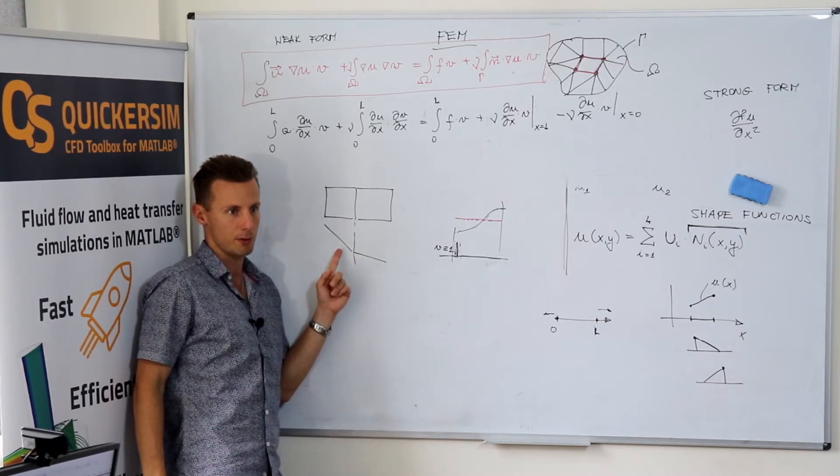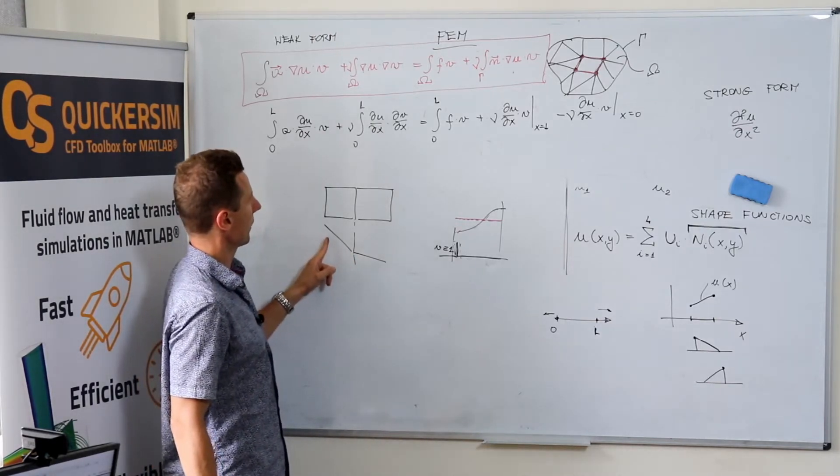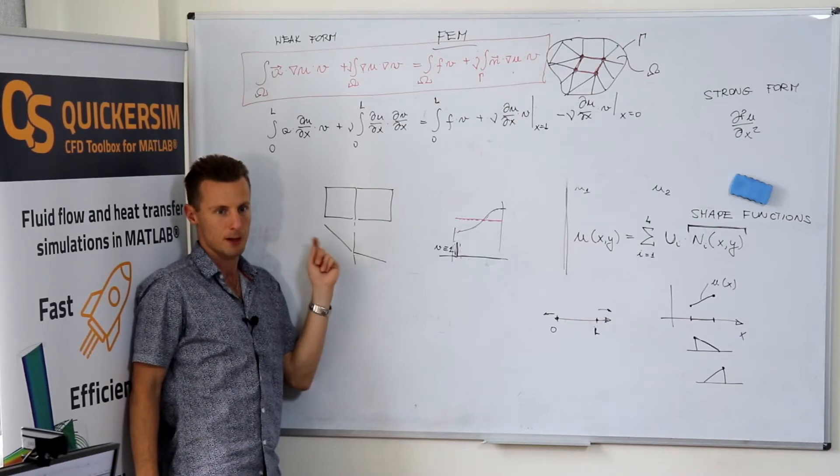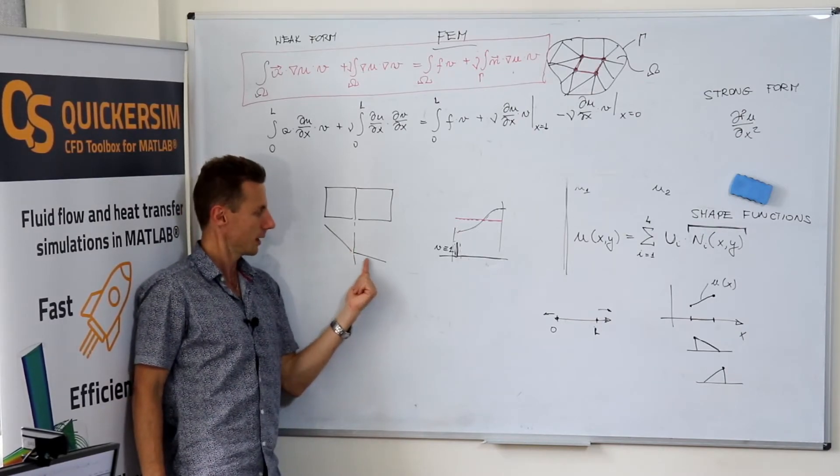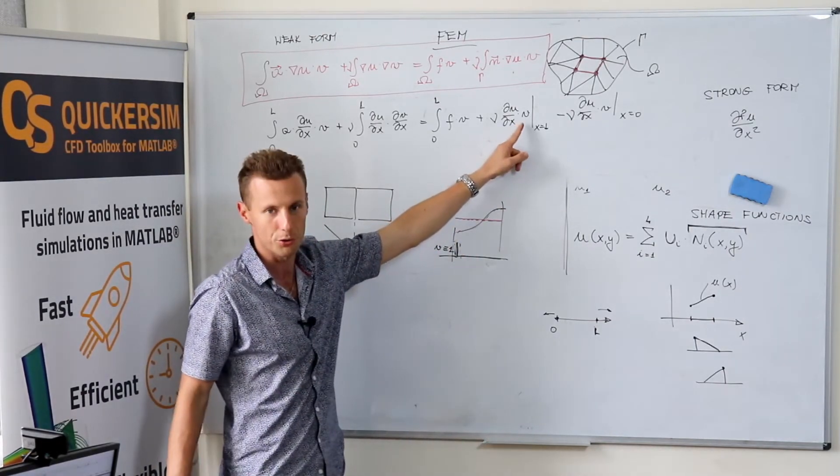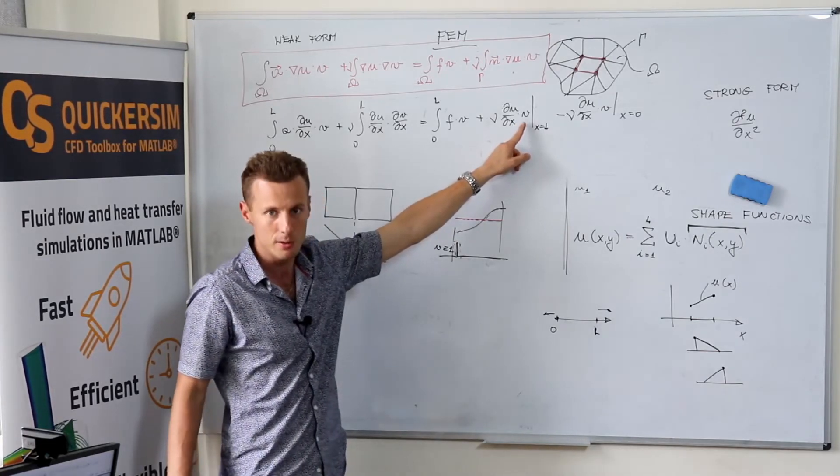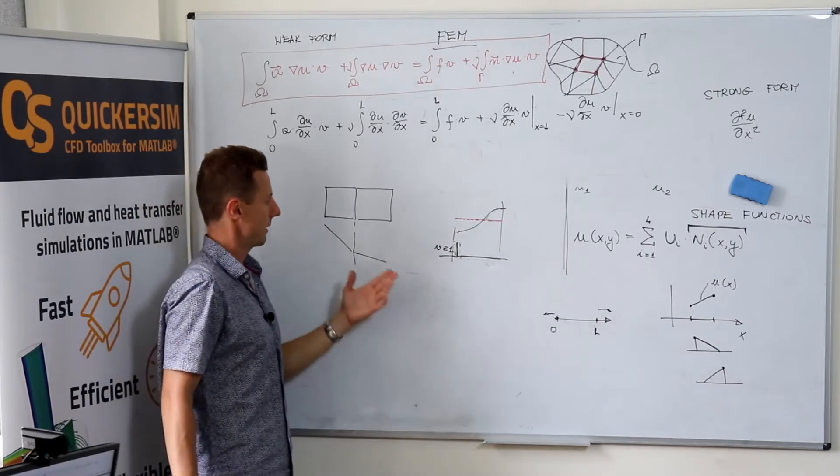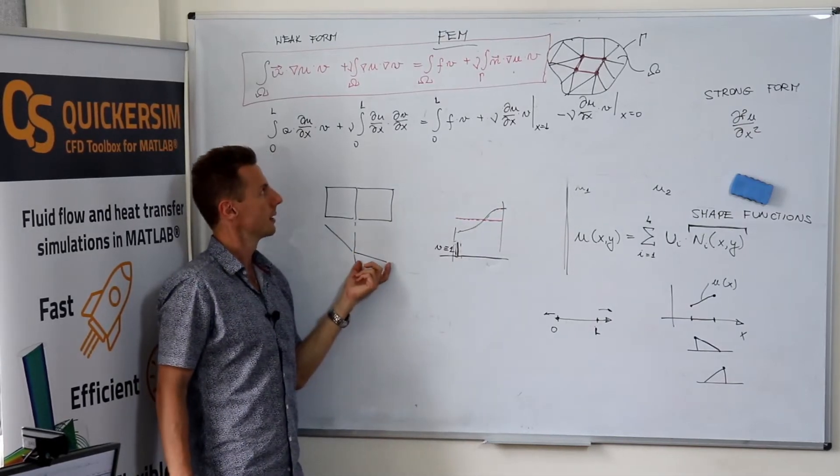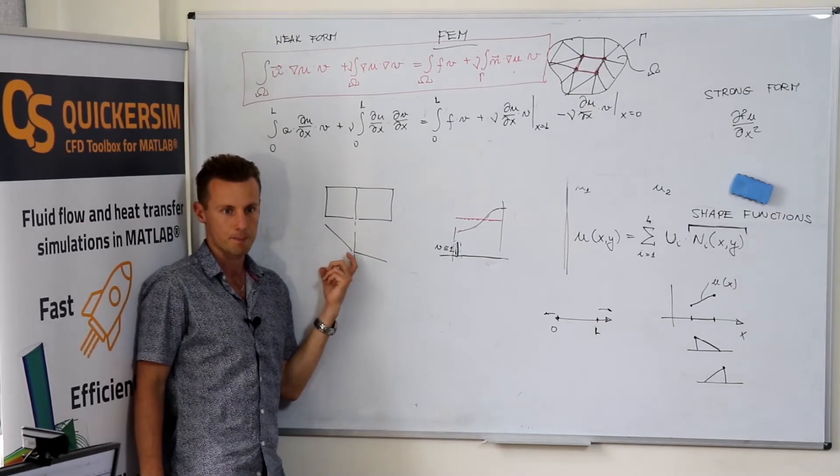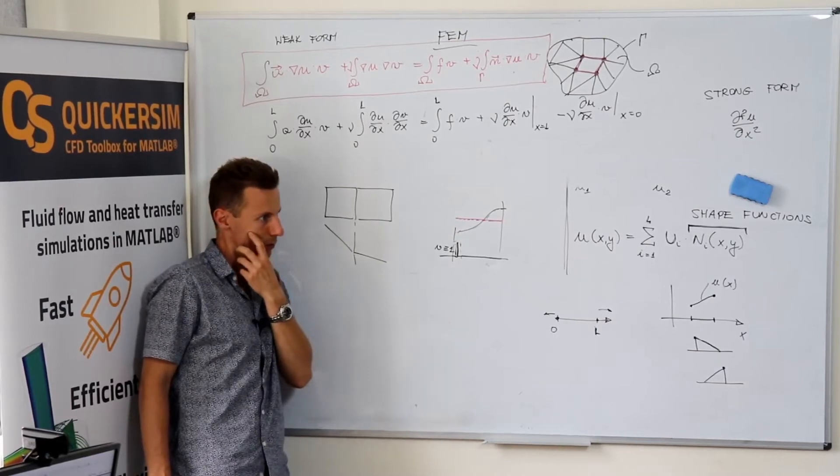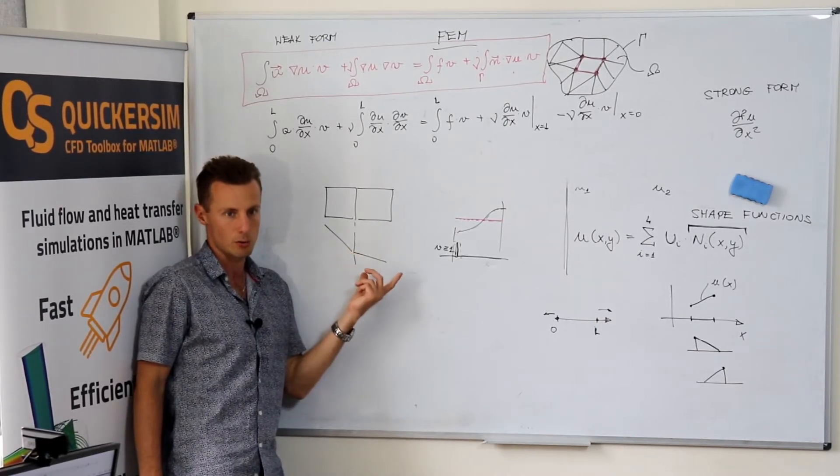If you reformulate it to the weak formulation, it turns out that the only thing that you require is that the first derivative exists. Well, it exists here. It exists here. You've got some v functions that we didn't tell much what you require from these test functions. But just believe me for a while that you also require them having the first derivatives and you've got everything in place and with absolutely no tricks it will work and it will work properly even if you've got variable heat conductivities or diffusivities.